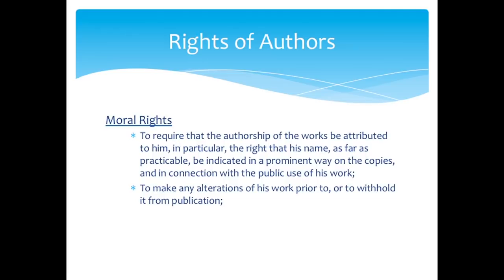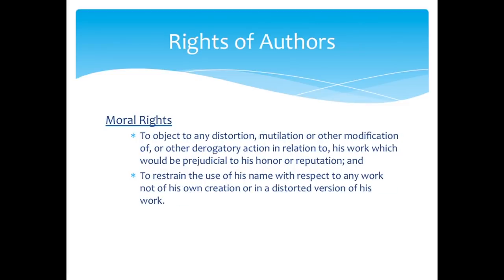Moral rights, as against economic rights, cover the right of the author to require that the authorship of the work be attributed to him — that's the right of attribution. Another right covered by moral rights is the right of the author to make any alterations of his work prior to, or to withhold it from, publication. He also has the right to object to any distortion, mutilation, or modification of the work or other derogatory action which would be prejudicial to his honor or reputation. And lastly, he has the right to restrain the use of his name with respect to any work not of his creation or in a distorted version of his work.